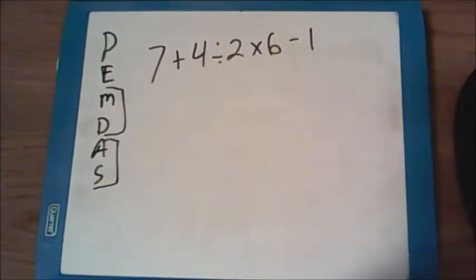We have 7 plus 4 divided by 2 times 6 minus 1. Go ahead and pause the video to work on the problem and resume playing when you've finished.